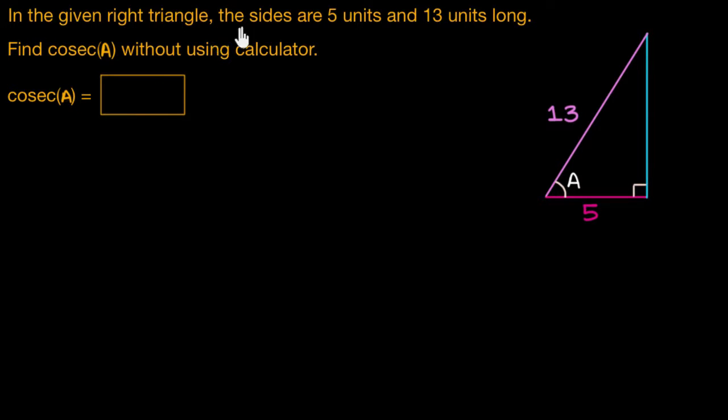In the given right triangle, the sides are 5 units and 13 units long. Find cosecant of A, or cosec A as I call it, without using a calculator.